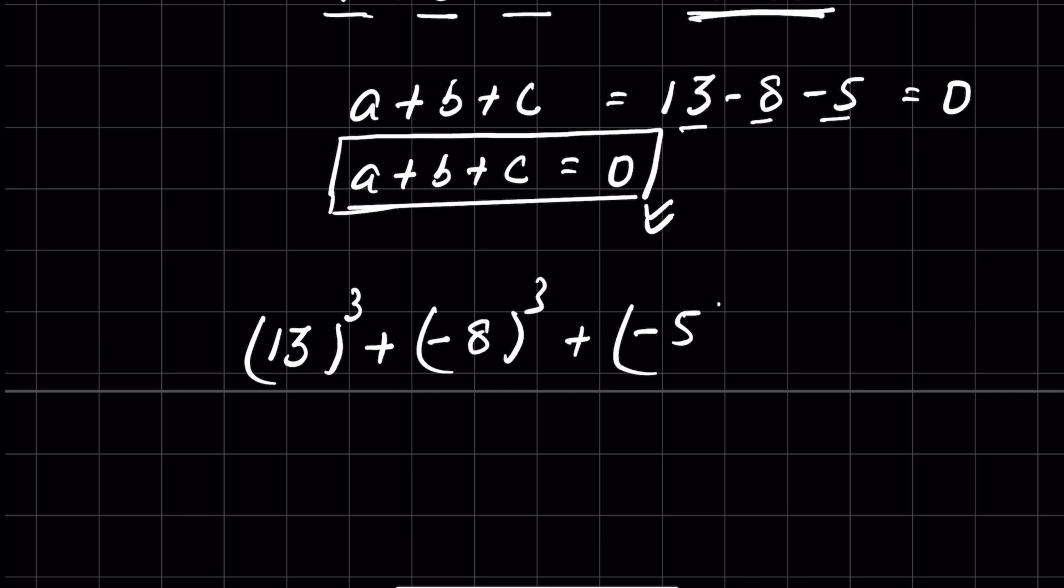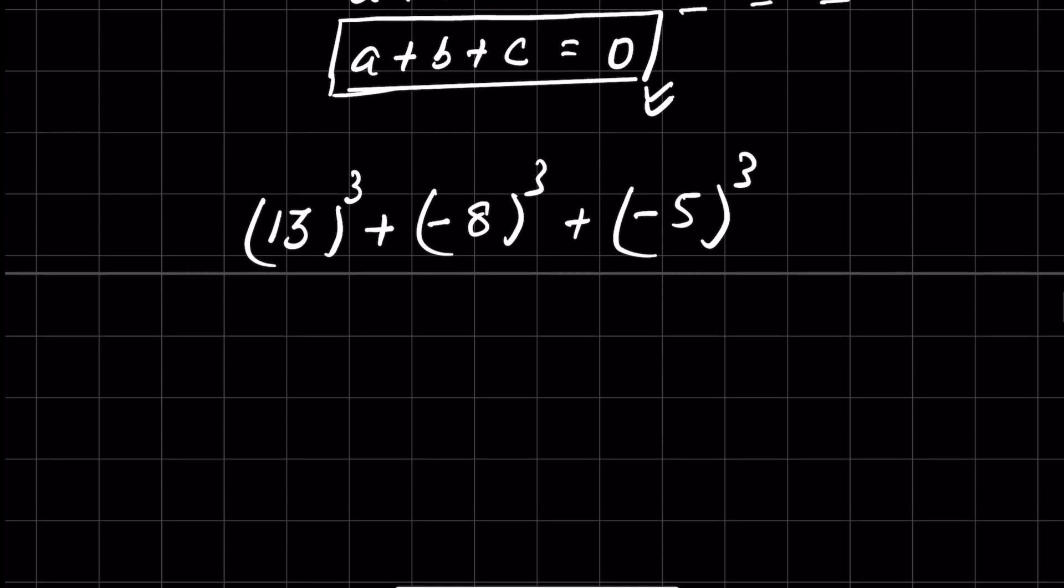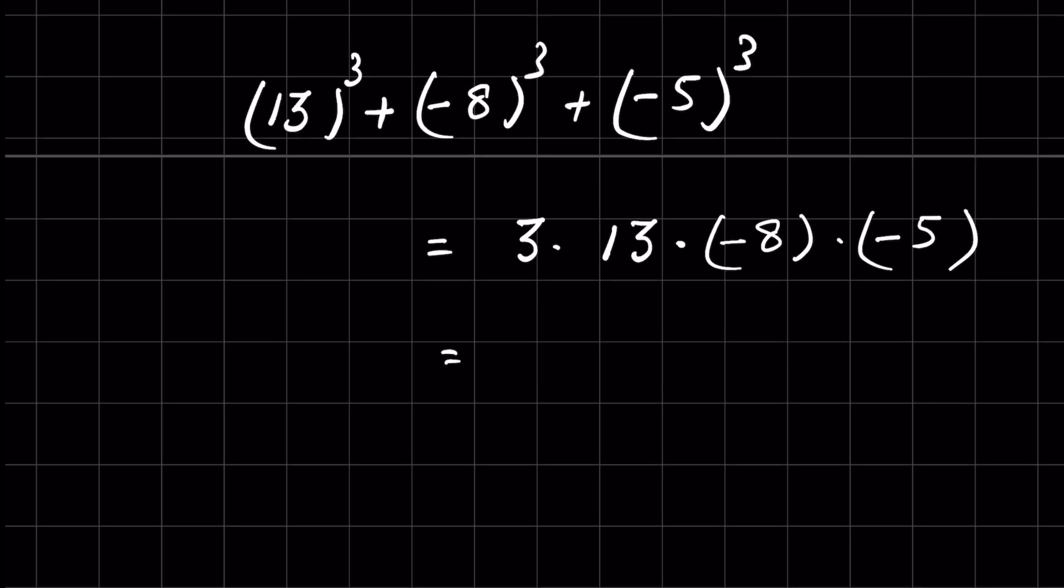(-5)³, this we can write as this equals 3 × 13 × (-8) × (-5). So 13 × 3 is 39, -8 × -5 will be positive 40.